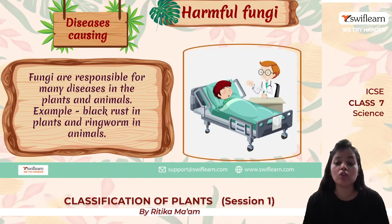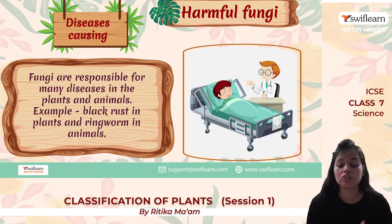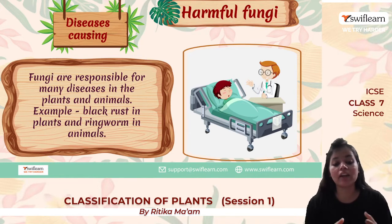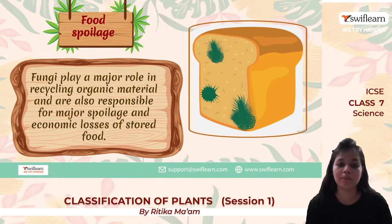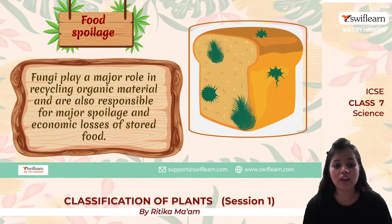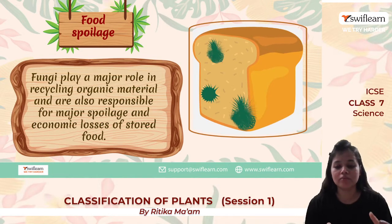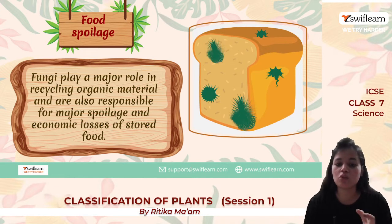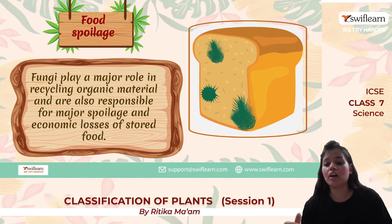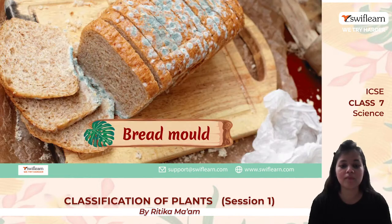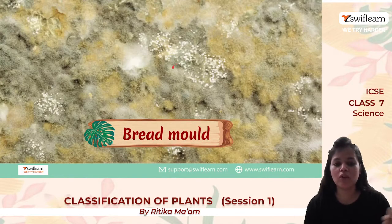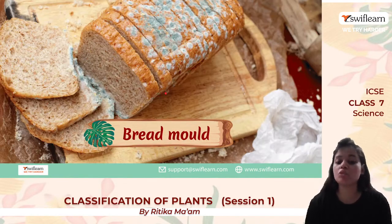Fungi are not always useful — sometimes they cause diseases. In plants, fungi can cause black rust. In animals, fungi can cause ringworm. Fungi can also spoil our food, leading to economic loss of stored food. In large granaries, if fungi spoil the grain, it leads to great economic loss. Here we can see bread mold on which fungi is growing and the bread is completely spoiled.